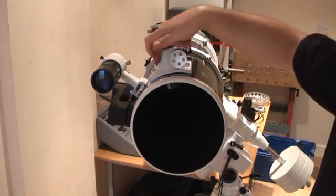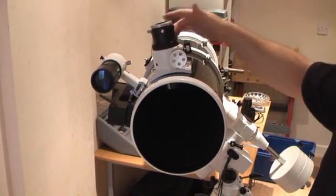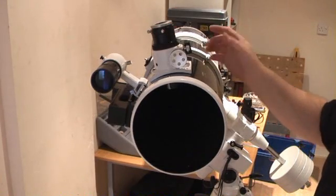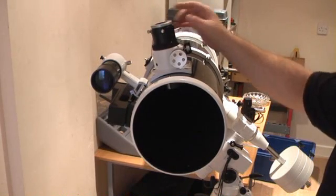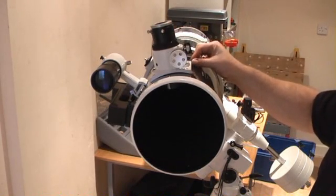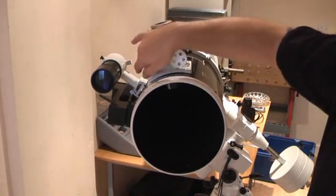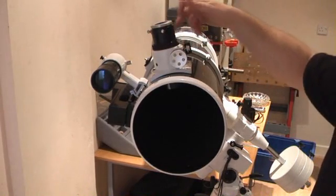Now your focuser does have some collimation bolts on it. Your focuser might be different than this. Some don't, some do. If not, then you can shim them with washers. Just pull the focuser off, put a washer or two underneath and shim it. But usually you have got some collimation bolts in the focuser.